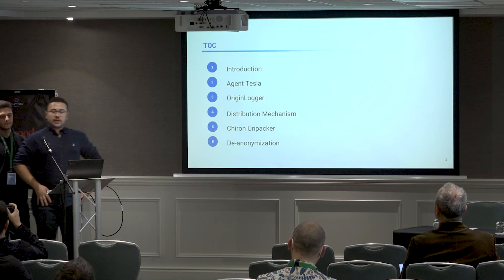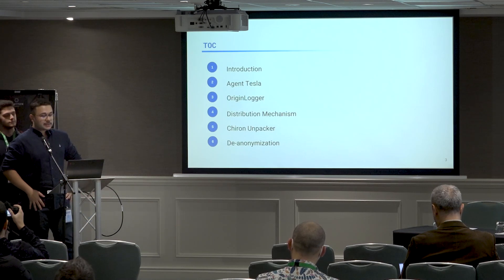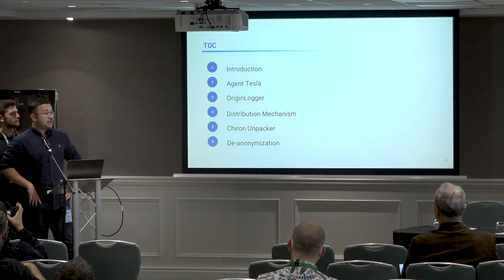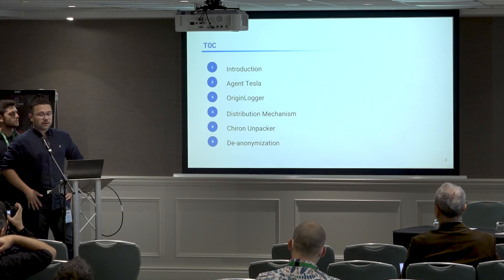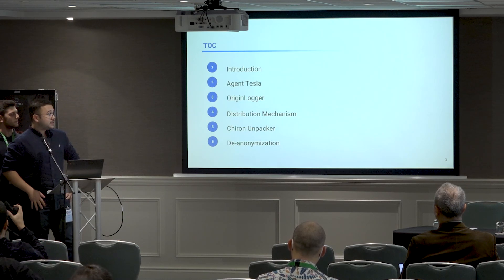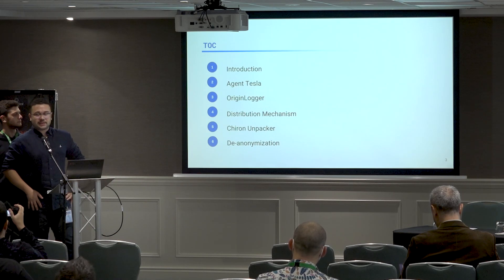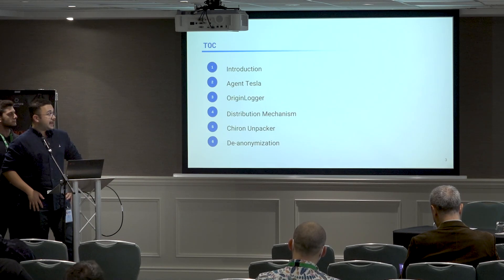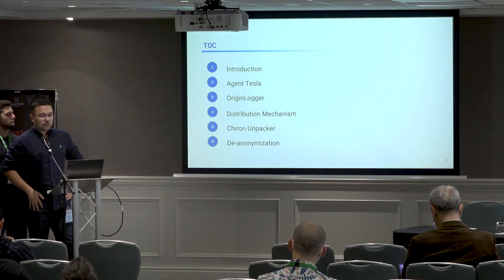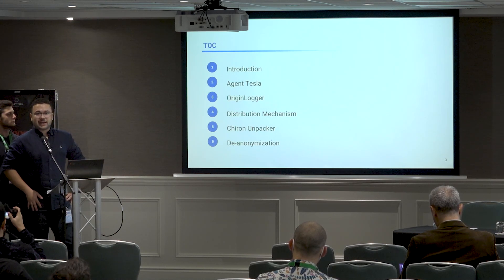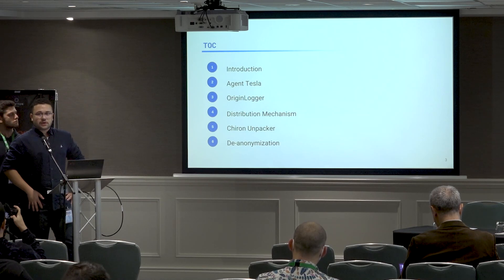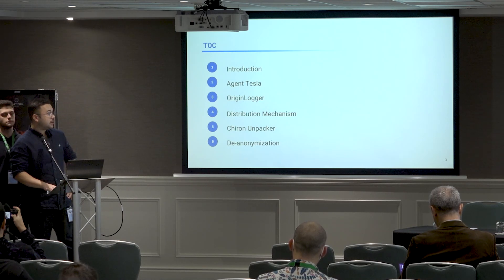Today we will talk about Agent Tesla and how the team released a second logger, OriginLogger. After the team stopped sales, there was a law enforcement operation against the team and they changed their whole operations. We will also cover their obfuscation and packing methods, and our Chiron Unpacker project.